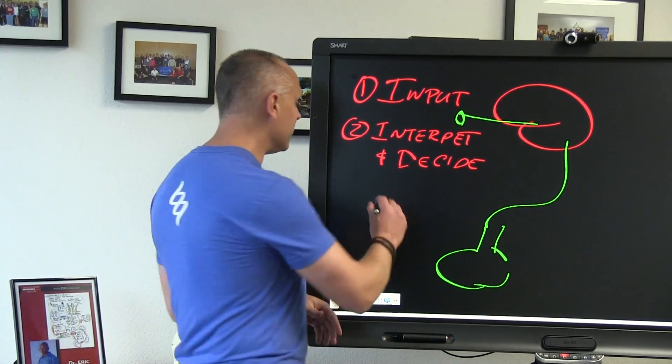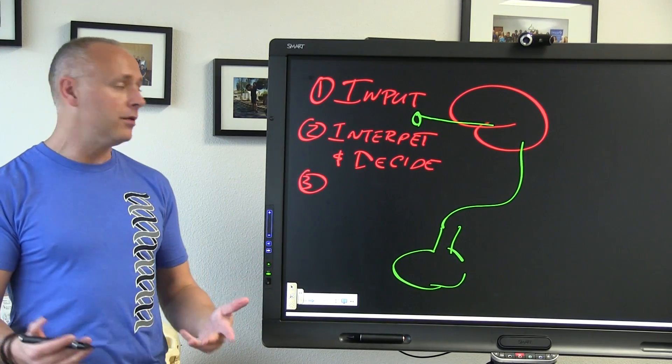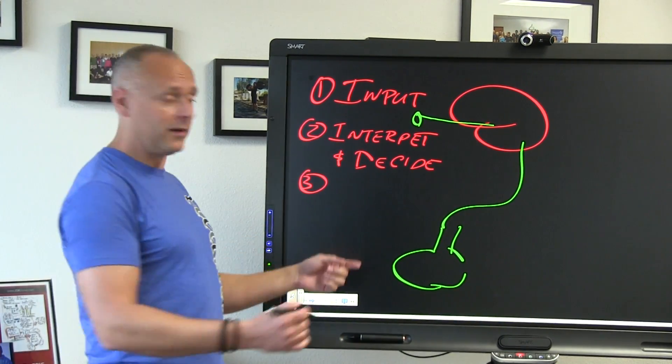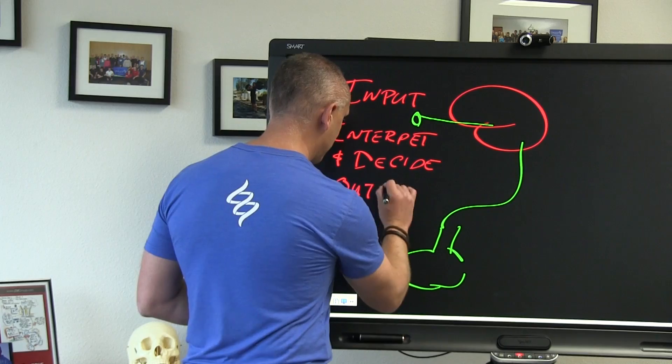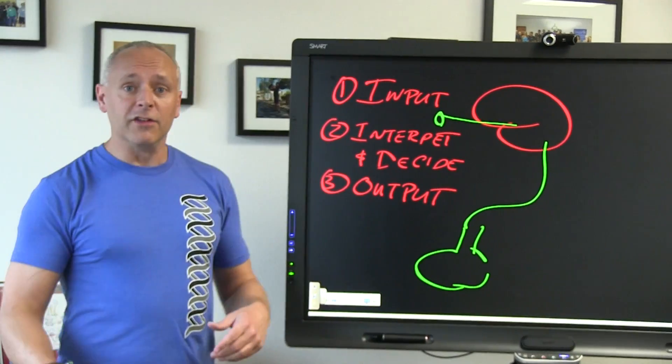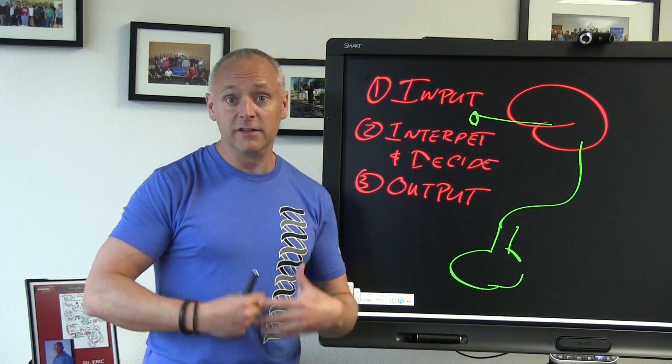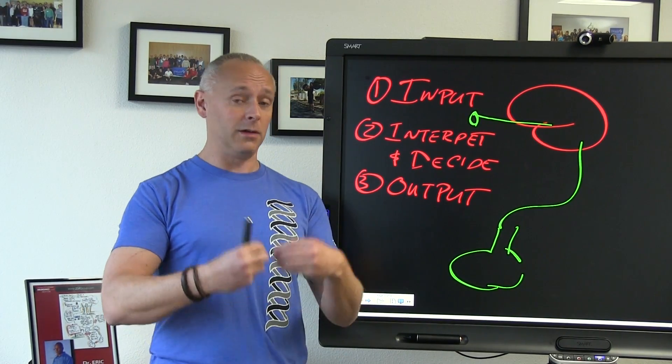Then we go to the third thing that your brain or body, nervous system, however you want to think about it, has to do, which is create a guess what? An output. An output is all about muscles and reflexes and visceral responses and heart function and blood pressure.